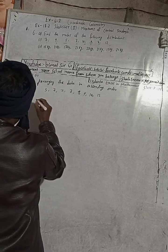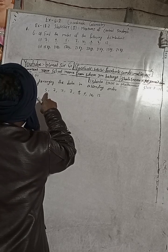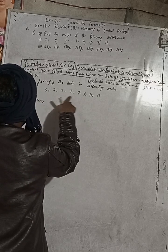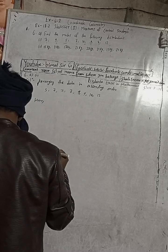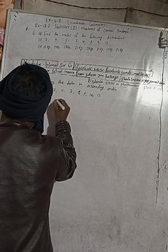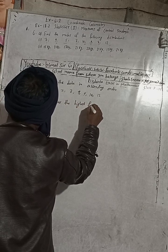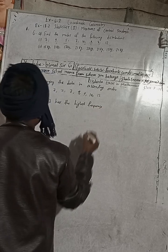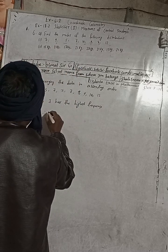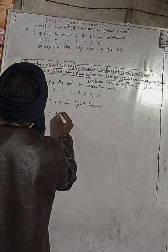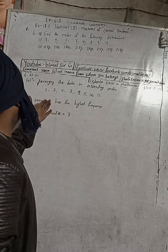Now we can see: 5 appears 1 time, 7 appears 3 times, and 9 appears 2 times. So 7 has the highest frequency. Therefore, the mode is equal to 7. The data value with the highest frequency is called the mode.